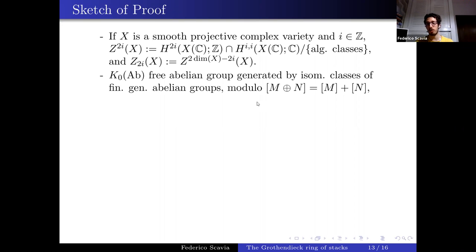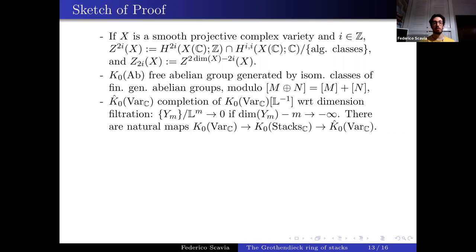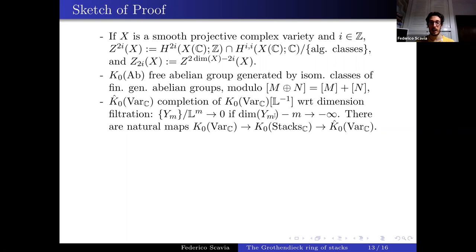The ring K̂0 Var is the completion of K0 Var (with L inverted) with respect to the dimension filtration: a sequence Y_m modulo L^m goes to zero when the dimension of Y_m minus m becomes arbitrarily negative. There are natural maps: K0 Var → K0 Stacks → K̂0 Var.